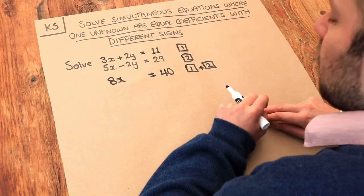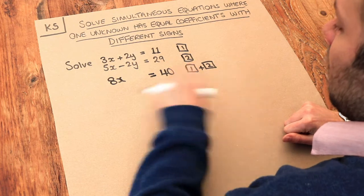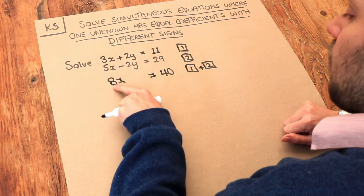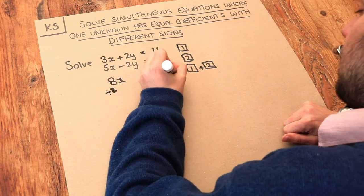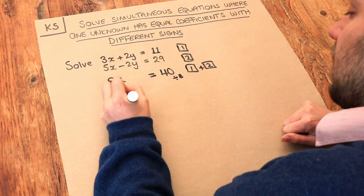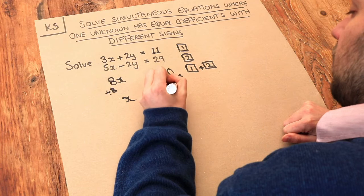Now if 8x is equal to 40, that's great. We've got a single equation involving just one variable. To get rid of that 8, because x has been multiplied by 8, we divide both sides by 8. And that gives us x is equal to 40 divided by 8, which equals to 5.